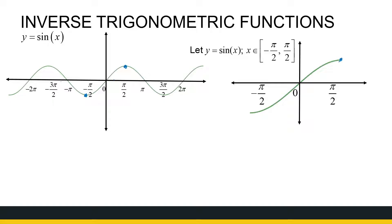This is what it looks like then — I've got a one-to-one function. It just goes from minus one to one and that's the shape it takes on. Now if I've got this sine function with a limited domain, now I can find the inverse function. And inverse functions are handy and that's why we're required to look at this.